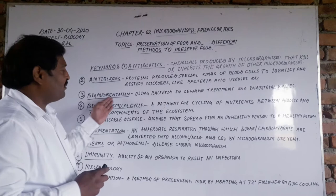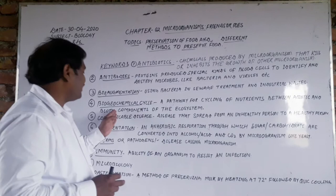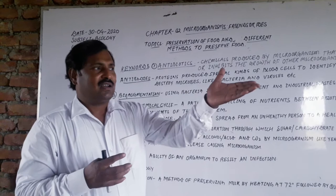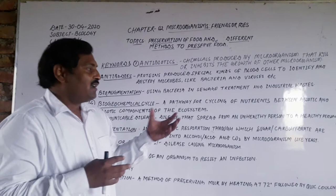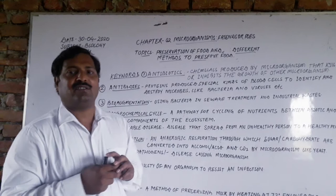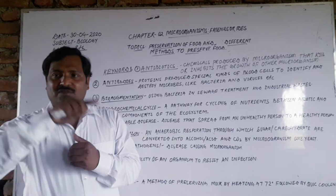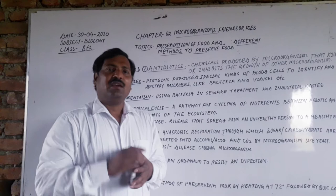The fourth keyword is bio-geochemical cycles. It is a pathway for cycling of nutrients between the abiotic and biotic components of the ecosystem. The abiotic components include soil, air, and water. When biotic components are decomposed by the action of air, water, and microbes, nutrients return to the soil, and plants absorb them again — thus the cycle continues.